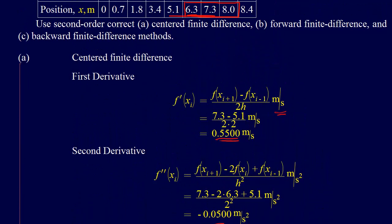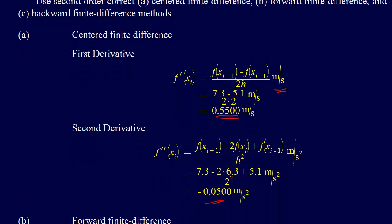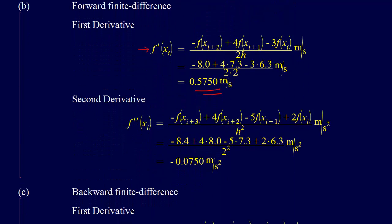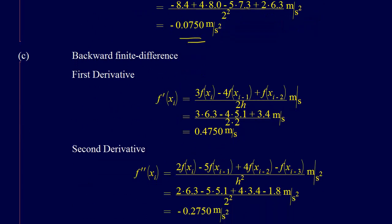Those are all from the 10 onward. These are the values that we're using in this approximation. We're only going forward, whereas before when we did centered, we went in both directions. So we get minus 0.0750 meters per second squared for the second derivative.